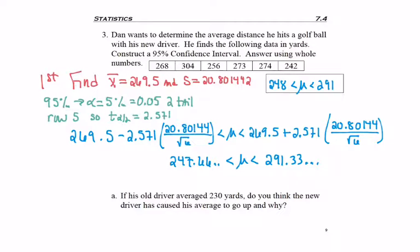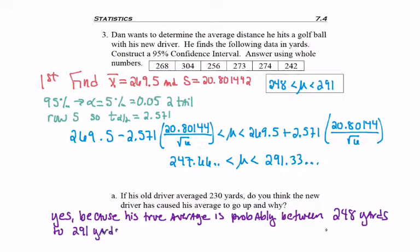The bottom asks, if his old driver averaged 230 yards, do you think the new driver has caused his average to go up and why? Yes, because his true average is probably between 248 to 291 yards. All values in this range are above 230. So, no matter where it falls in our confidence interval, it's got to be a number that's over 230.